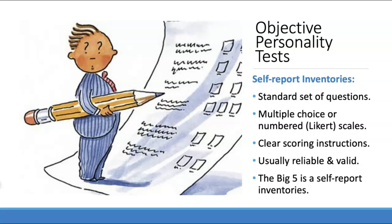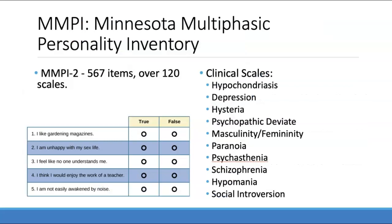One objective self-report inventory worth mentioning is the MMPI — the Minnesota Multiphasic Personality Inventory. This is probably the most widely used personality inventory, particularly by clinical psychologists. While the Big Five is common in research, the MMPI is used when working with patients for diagnostic purposes. It was originally developed specifically to assist in diagnosing psychological disorders — note 'assist,' as it should not be used alone to diagnose. You can use the pattern of symptoms to help inform a diagnosis.